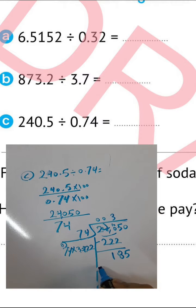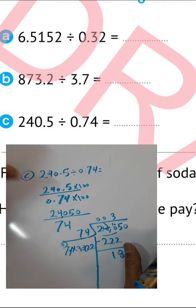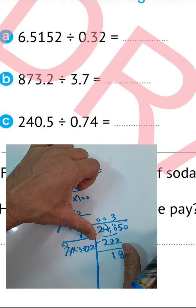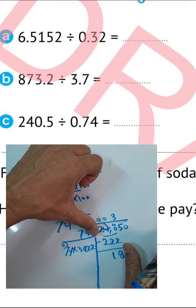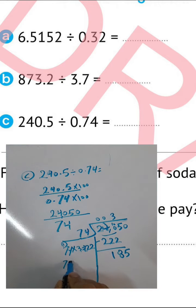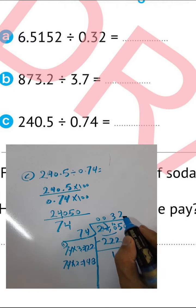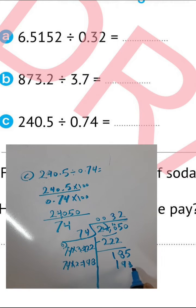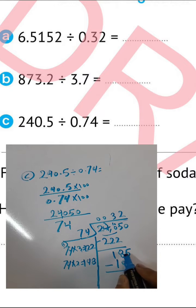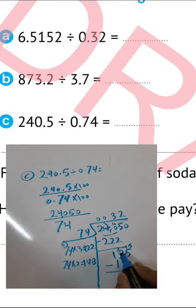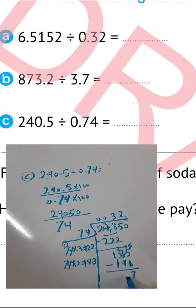185 divided by 74: digit by digit 18 divided by 7 gives 2. 74 times 2: 2 times 4 equals 8, 2 times 7 equals 14 — giving 148. Write 2 outside. 185 minus 148: 5 minus 8 we can't do, so 15 minus 8 equals 7, and 7 minus 4 equals 3 — giving 37.